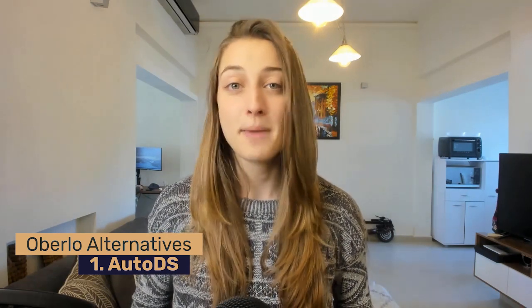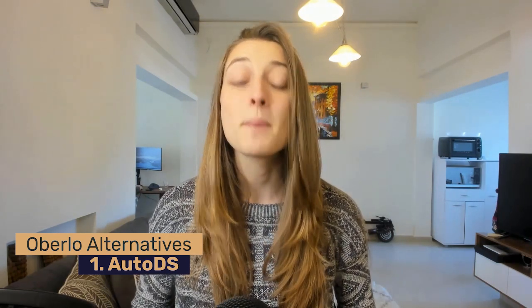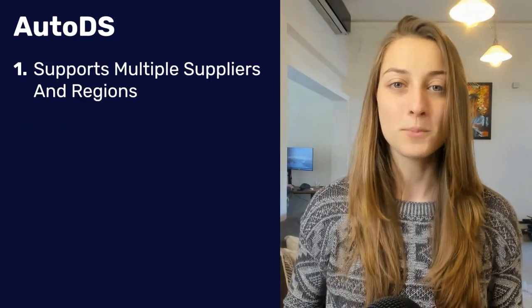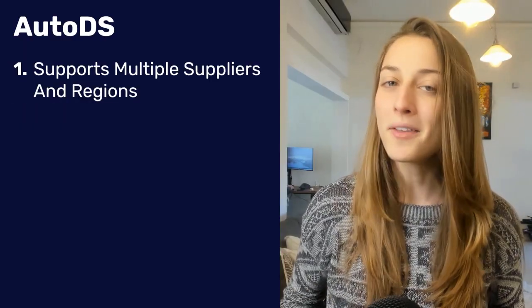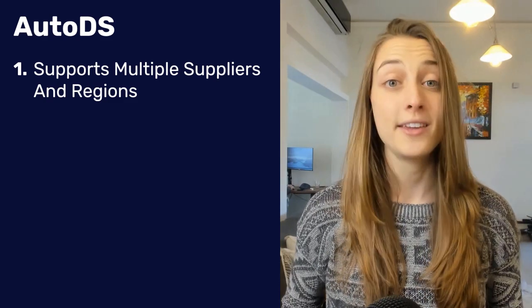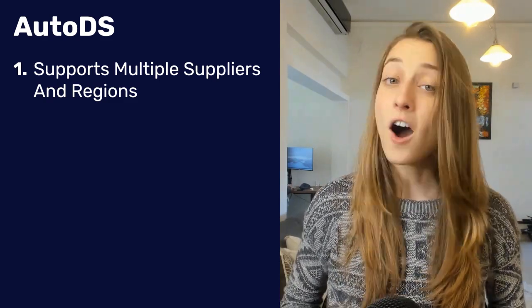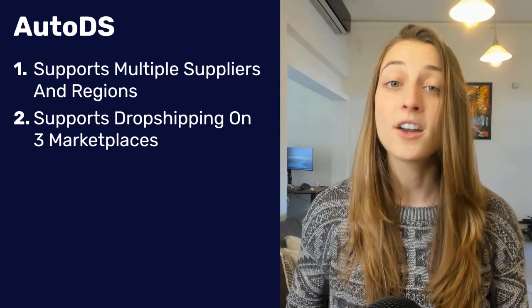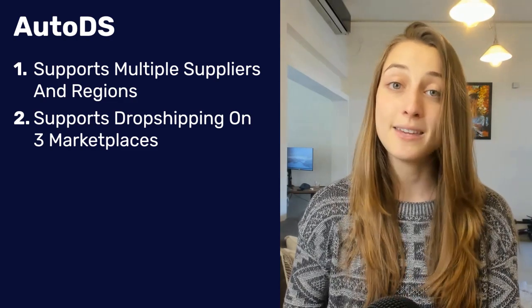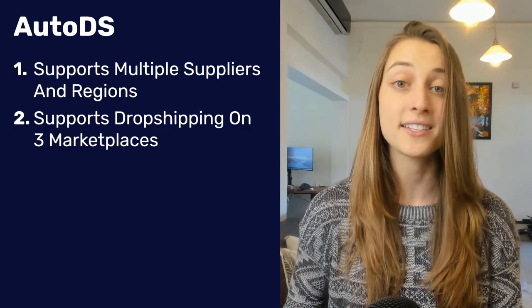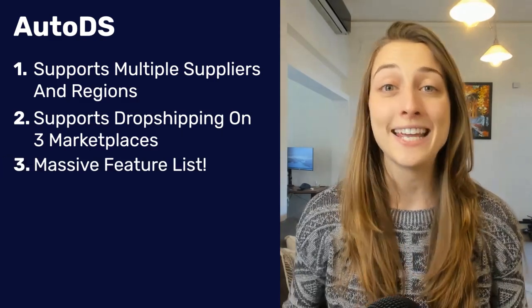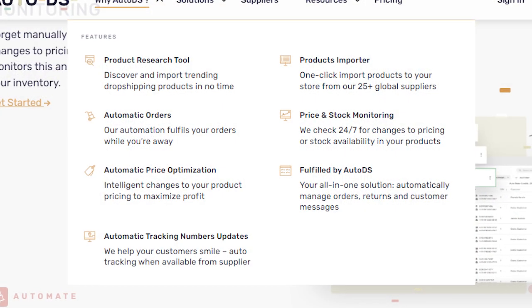Our first software is a little self-plug: AutoDS. They work with multiple suppliers and regions, so unlike Oberlo there are over 25 suppliers to choose from. AutoDS enables drop shipping on three platforms: Shopify, eBay, and Facebook Marketplace. They also have features like automatic and bulk product importing, price and stock monitoring, product research tools, and order automation.